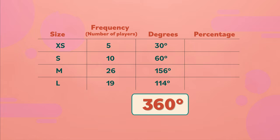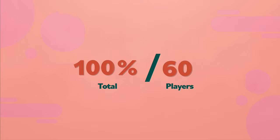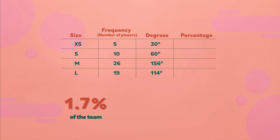Finally, she adds a fourth column, which will show the percent of each size. If a hundred percent represents the total, and this is divided among sixty players, this means that each athlete equals roughly one point seven percent of the team.